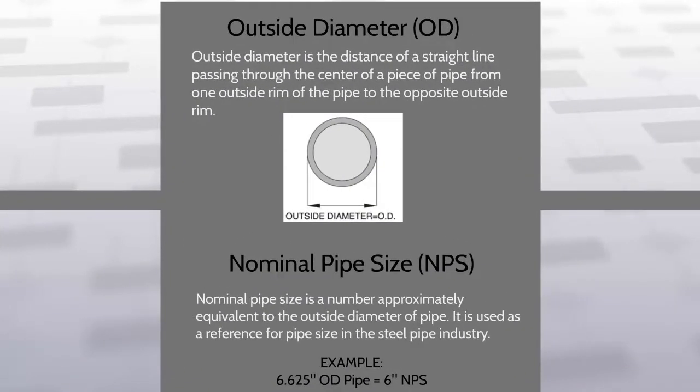Let's start with the outside diameter, also referred to as the OD. Outside diameter is the distance of a straight line passing through the center of a piece of pipe, from one outside rim of the pipe to the opposite outside rim, as you can see in the diagram.